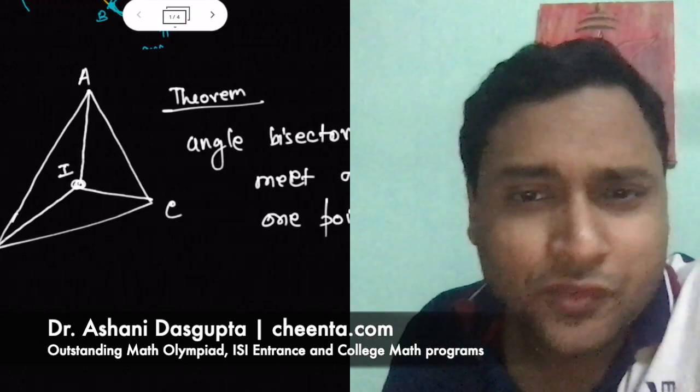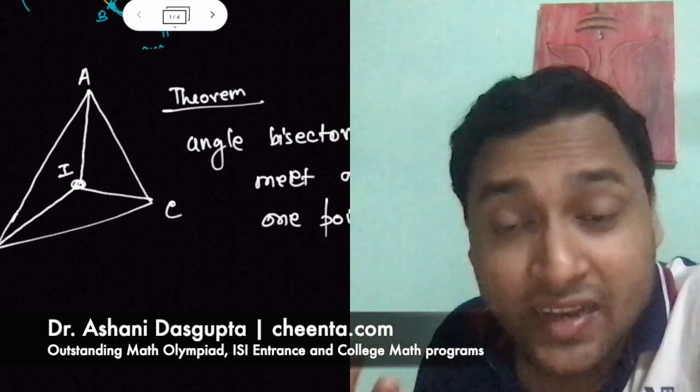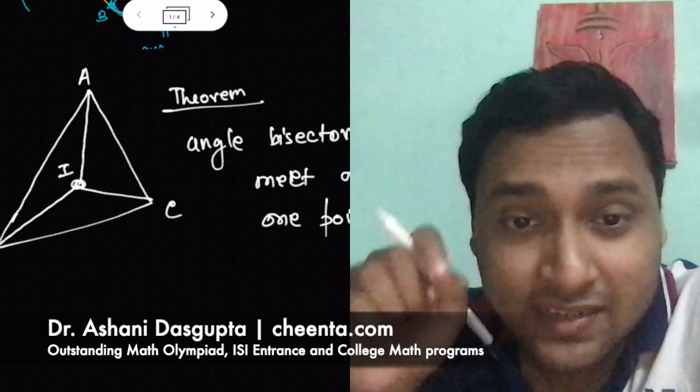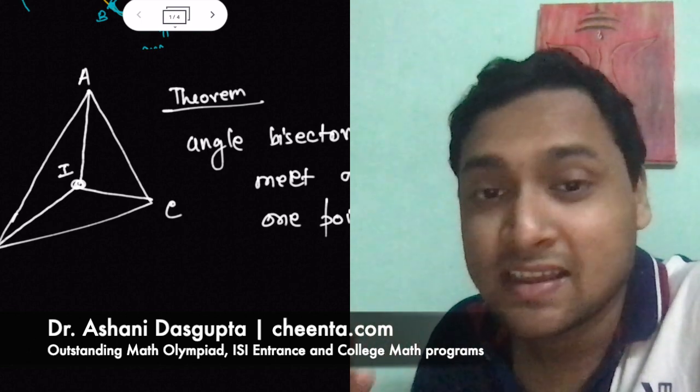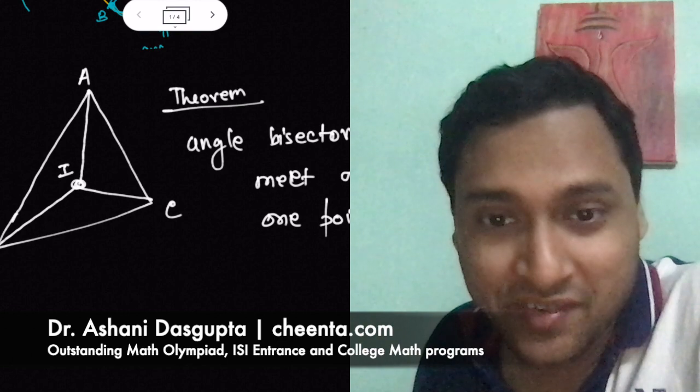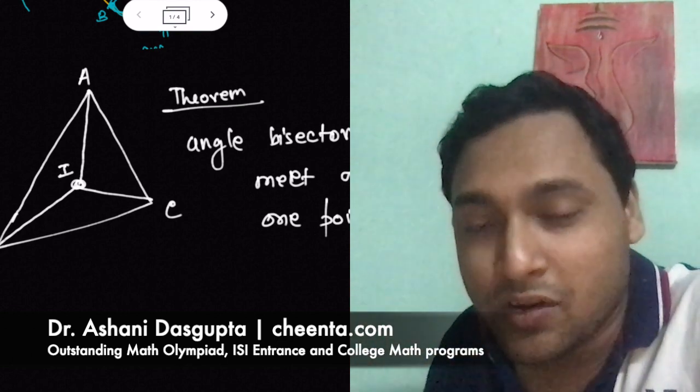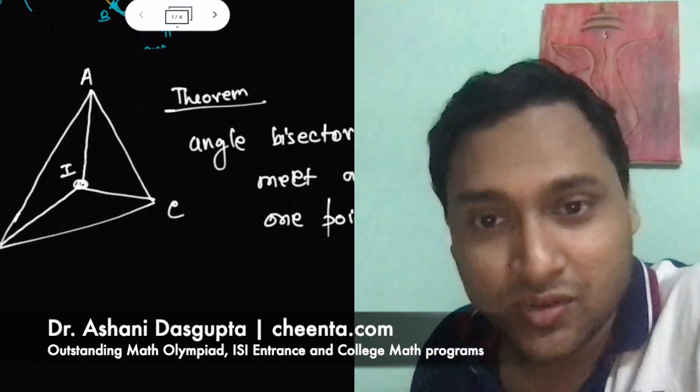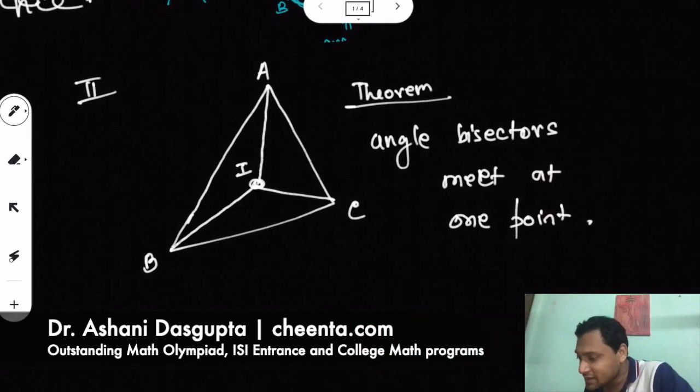I have a question for you. Do you think that the angle bisectors of any quadrilateral also meet at a single point inside the quadrilateral? Is there something called an incenter of a quadrilateral? If you think yes or no, give reasons to your answer and put a comment in the description. Alright. So now let's look at this.